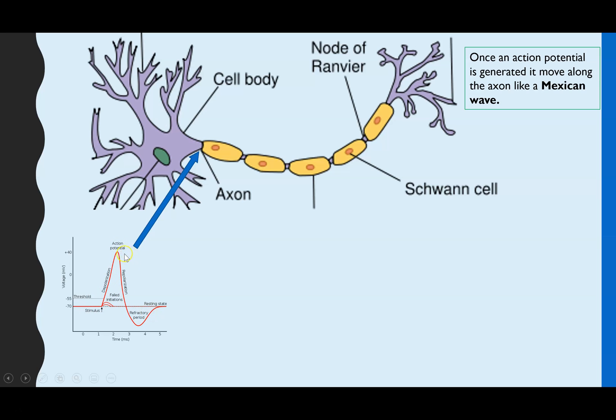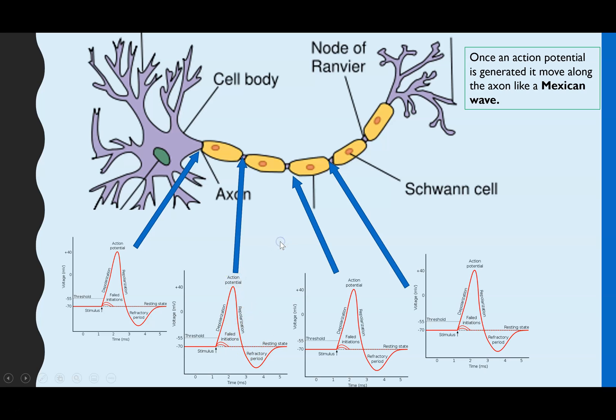And when you reach that plus 40 millivolts, that's enough to trigger the next part of the axon to start its depolarization wave. And so on and so on. That will keep happening at all of the nodes of Ranvier until we get right to the end, and then it will be passed on to the next neuron. So this movement of action potential, these are discrete events that happen all the way along like a Mexican wave.